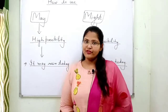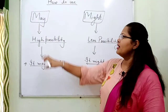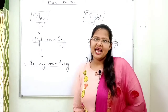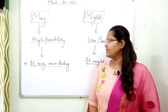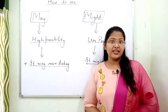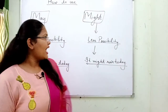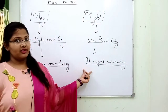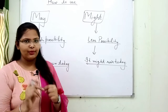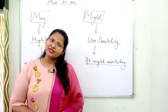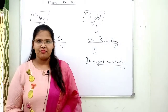Now we will know about the difference between may and might. May is used for high possibility, and might is used for less possibility. For example: it may rain today — here there is high possibility. And: it might rain today — but the possibility is less. So we use may for high possibility and might for less possibility. Also, one very important thing: might is also the past form of may.